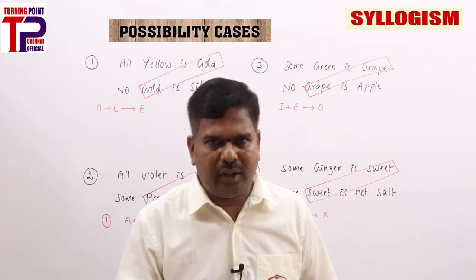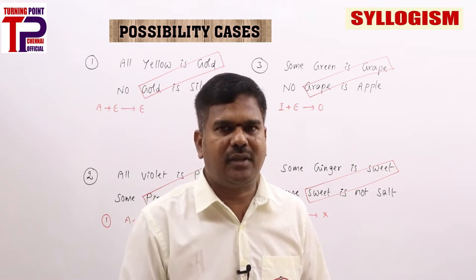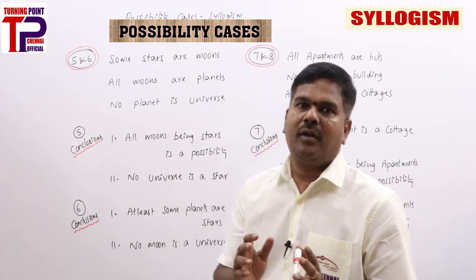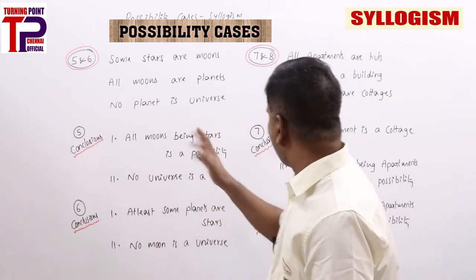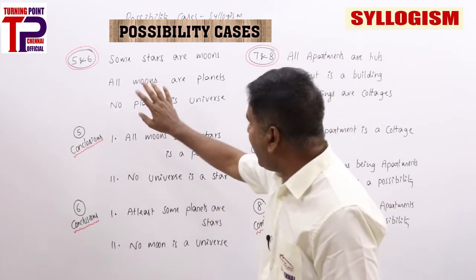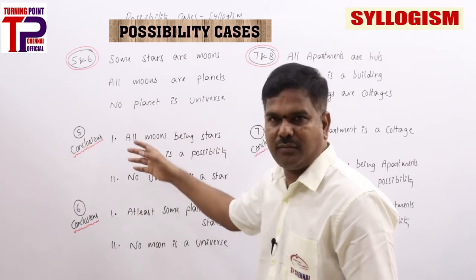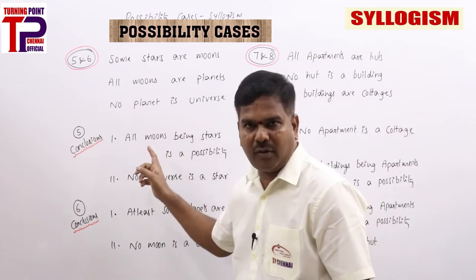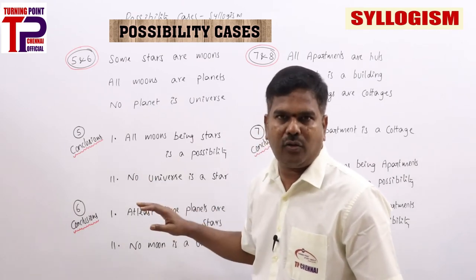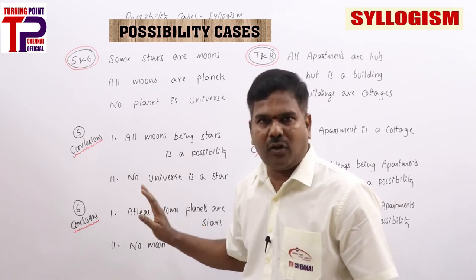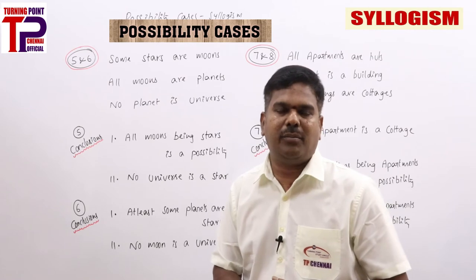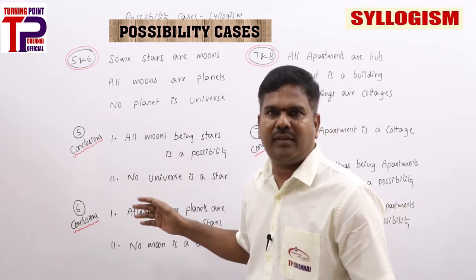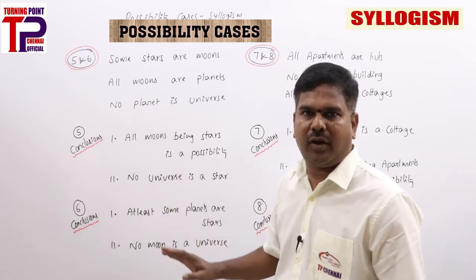We are going ahead with the actual exam pattern questions from questions 5 to 8. The answer options are: 1 — only one follows, 2 — only two follows, 3 — either one or two follows (complementary pair), 4 — none follows, 5 — both follows. Not all conclusions will be possibility cases; wherever possibility cases are mentioned, solve accordingly; otherwise, solve normally.